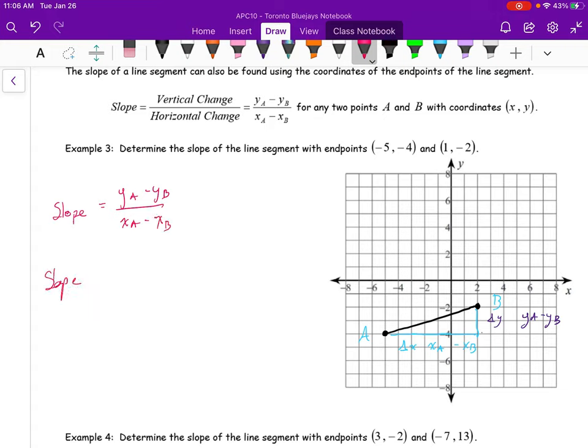So, my slope is going to be equal to, well, I'm going to call this A and this B. yA is minus 4 minus yB is 2.